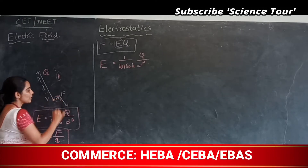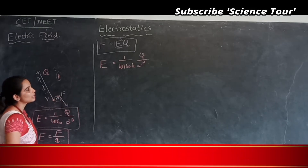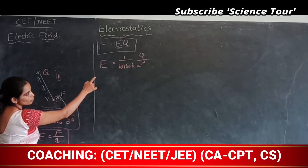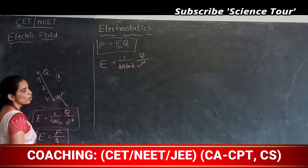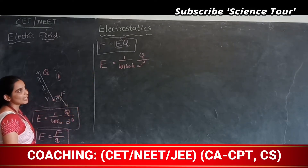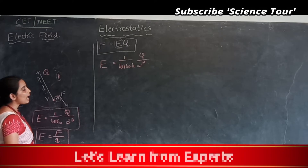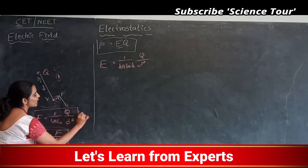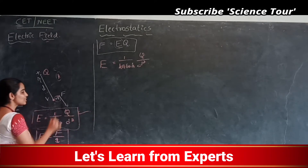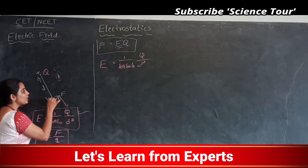Electric field intensity in a dielectric medium is E = (1/4πε₀K) × Q/R². If the medium has dielectric constant K, the intensity is E_medium = E_vacuum / K.